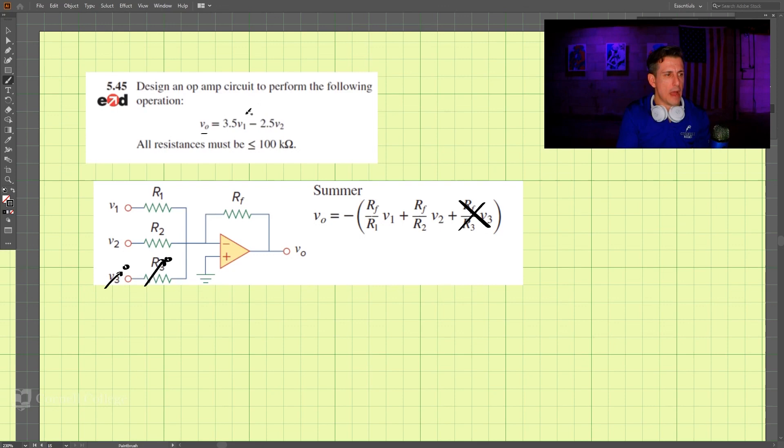If we want to perform this math here, we need rf divided by r1 to equal 3.5. So we can choose whatever we want and I'm just going to choose rf is equal to 35 kiloohms, which then makes r1 10 kiloohms, easy enough.